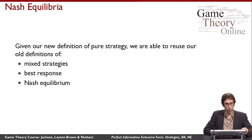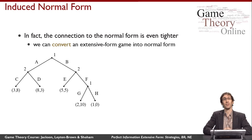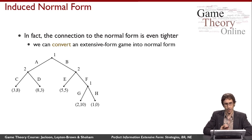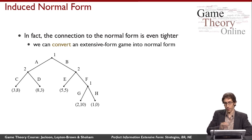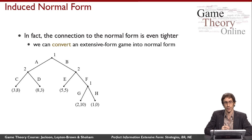We might wonder whether Nash equilibria exist and how to reason about them. There's a tight connection to the normal form: we can convert an extensive form game into the normal form. This is useful because we can leverage results about the normal form — like the existence of equilibrium — just by virtue of the corresponding normal form game. Also, if it's easier to reason about the normal form, we can construct and examine it rather than the extensive form.